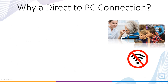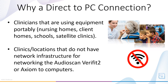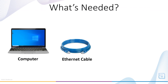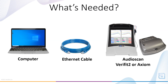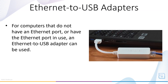A direct-to-PC connection may be helpful for clinicians that are using equipment portably. It can be handy to have a network connection at these facilities, where otherwise it would not be available. The AudioScan Verifit 2 and Axiom utilize link-local addresses, also known as automatic private IP addressing for this feature, enabling a unique individual network that allows your computer and the AudioScan Verifit 2 or Axiom to exchange data without connecting to a conventional network. Simply plug the Ethernet cable into the computer's Ethernet jack and the AudioScan Verifit 2 or Axiom's Ethernet jack. For computers that do not have an Ethernet port, or for computers with a jack that is already in use, an Ethernet-to-USB adapter can be used for connecting to the PC.